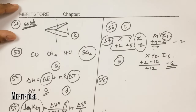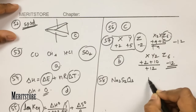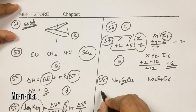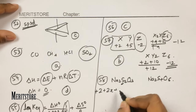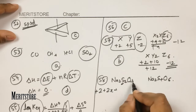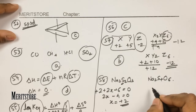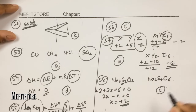Question number 58: find the oxidation state of sulfur in Na₂S₂O₃. Sodium is +1, so 2 sodiums give +2. Let sulfur be X, so 2X is present. Oxygen is −2, and three oxygens give −6. Equation: +2 + 2X − 6 = 0, giving 2X = 4, so X = +2. The oxidation state of sulfur is +2, option C.